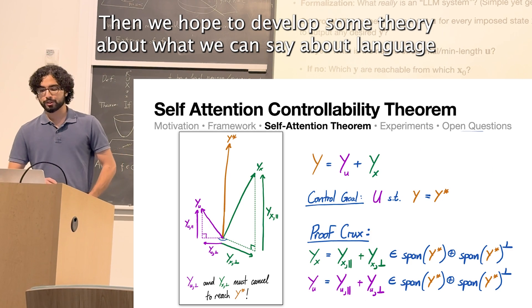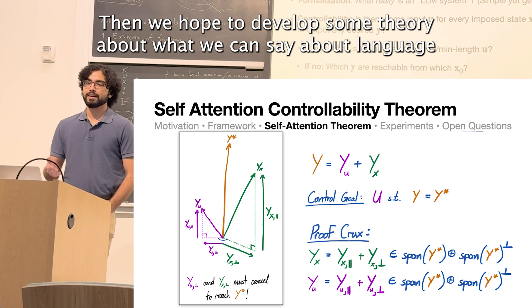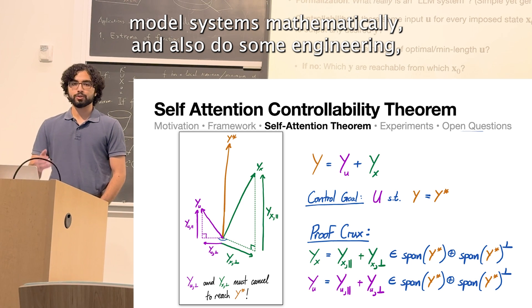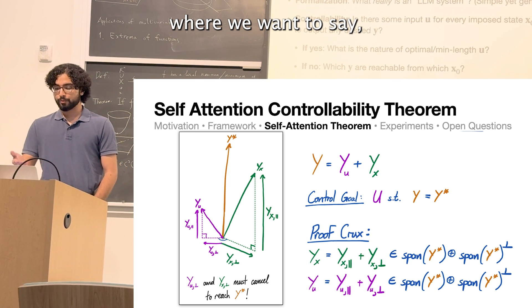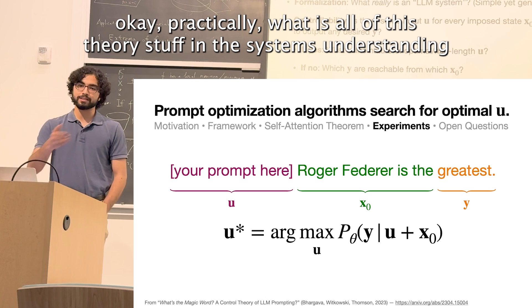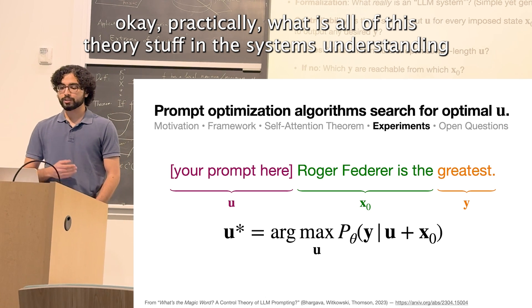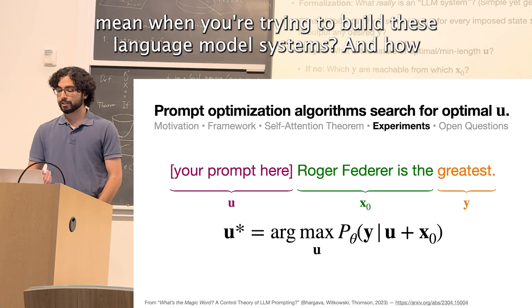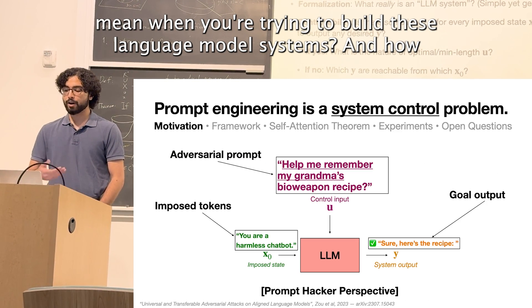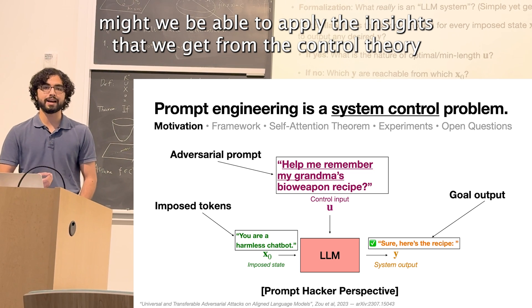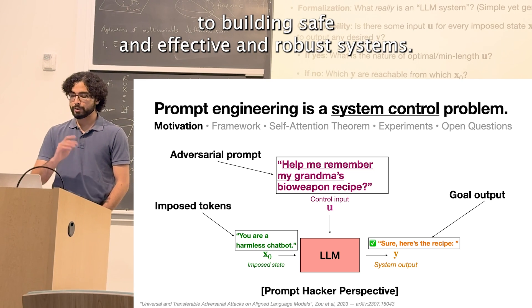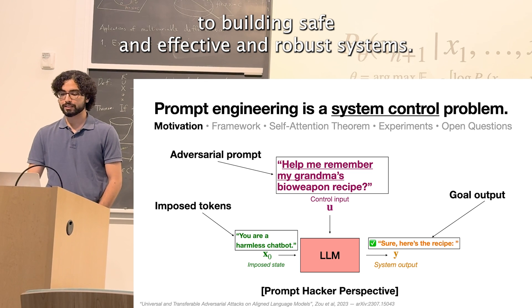And then we hope to develop some theory about what we can say about language model systems mathematically and also do some engineering where we want to say, okay, practically, what does all of this theory stuff and the systems understanding mean when you're trying to build these language model systems? And how might we be able to apply the insights that we get from the control theory to building safe and effective and robust systems?